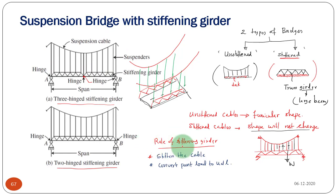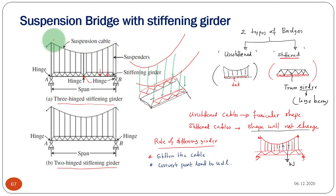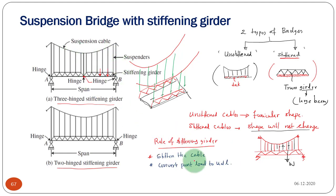The main purpose of stiffening girders is to stiffen the cable and to convert the vehicular point loads acting on the deck into a UDL to the main cable. This way, the cable is able to maintain its shape. Whatever loading acts on the deck slab, we have to convert that load to a uniformly distributed load. The point load is converted to the main cable as a UDL because of the stiffening girders.